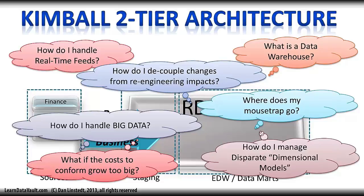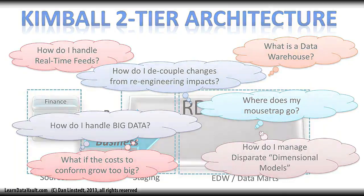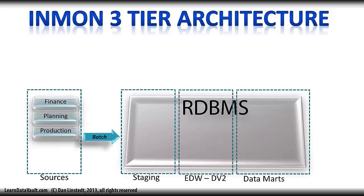What I've discovered over the years is you really need a different architecture from the get-go to make these things work and answer these questions properly. That architecture happens to be a three-tier architecture. Now does that mean it's an Inman three-tier architecture? No, not necessarily. It's really truly a three-tier architecture, and by three tiers I mean you need some form of staging area. As long as you have external feeds, XML files, or batch-type systems delivering data, even in a micro or mini batch, you're going to need some sort of staging area — relational or otherwise, even a NoSQL appliance.